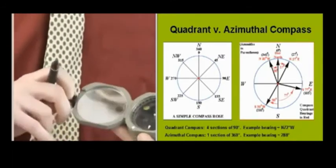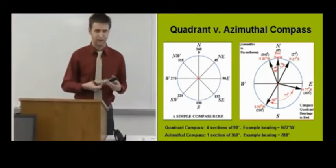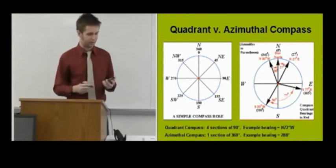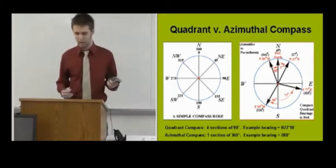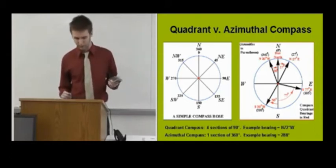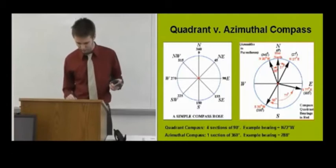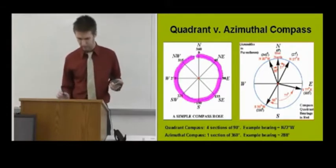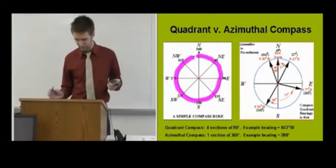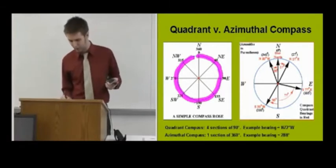All right, so by this time you've all been passed out a compass and you're figuring out the parts of it. But you're wondering, do I have an azimuthal or a quadrant compass? Now with an azimuthal compass, you'll notice that the bearings go from zero all the way around to 360. However, with a quadrant compass, you have four sections that go from zero to 90.